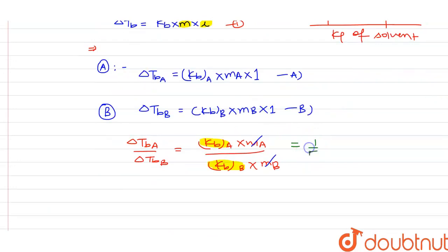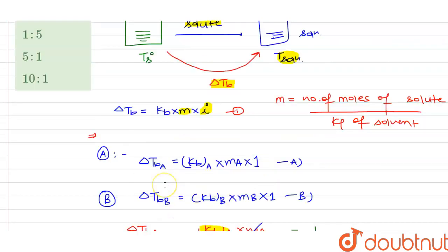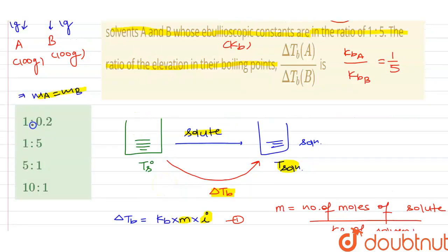equal to 1 by 5. From here we can easily conclude that the ratio of the elevation in boiling point with respect to A and B will be 1:5, which is the same as the ebullioscopic constant ratio. Our second option is correct. I hope you got my point.